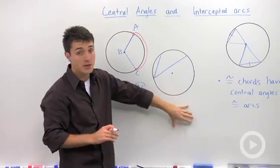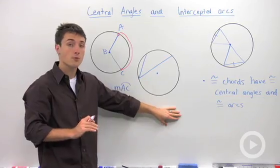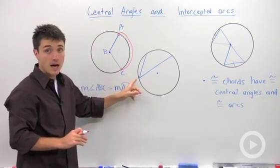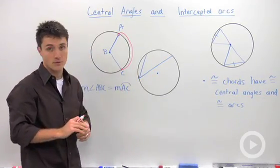On this picture right here I'm drawing something that is not a central angle. The reason is its vertex is on the circle, not at the center of the circle.